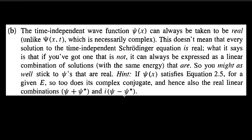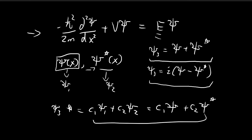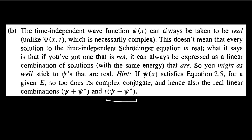Another way to construct a real solution is using i times (ξ − ξ*). Subtracting the conjugate removes the real component, leaving only the imaginary part, and then multiplying by i eliminates the imaginary number — so this expression is also entirely real. Using this method, we can also construct a solution to the time-independent Schrödinger equation with only real components. And so we have proved what we set out to prove.